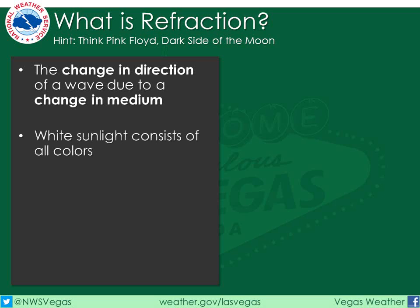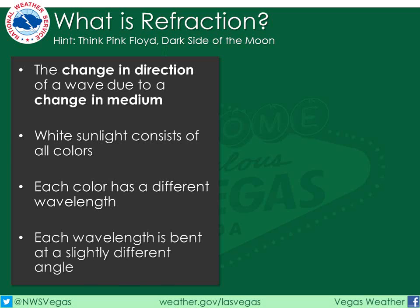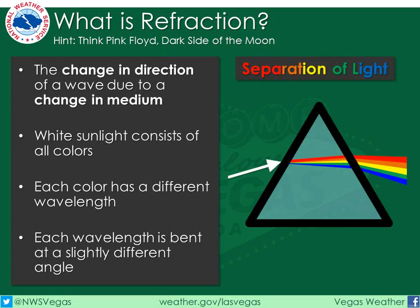If you recall from your school years, white sunlight consists of all colors in the visible light spectrum. Each color has a different wavelength, and each wavelength is bent at a slightly different angle. When a beam of light, indicated by the white arrow here, encounters a change in medium — in this case the triangular prism — the colors become separated. Note that this occurs not only when light enters the prism, but also when it exits, which acts to amplify the effect.